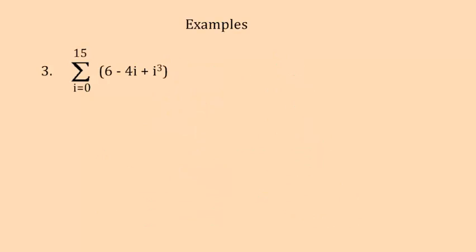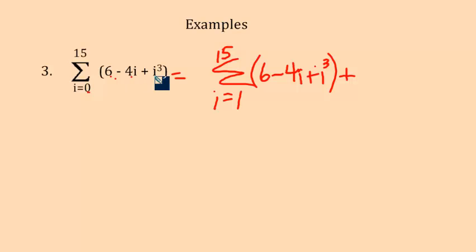One more example here. You'll notice in this example, we are again not starting out with a lower limit of 1. Here we are starting out with a lower limit of 0, which is actually lower than what we are supposed to be using, which is 1. So here I can go ahead and say I am going to sum from 1 to 15 so that I can use the formula. And here, that won't actually be enough. I am going to also have to plug in 0 manually. If I plug 0 in here, I get 6 minus 0 plus 0, which is 6.